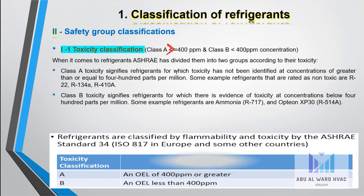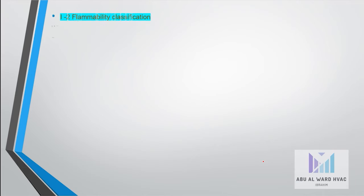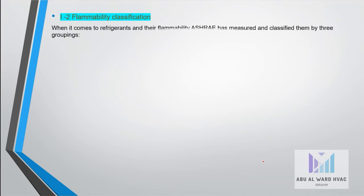According to ASHRAE, refrigerants are classified by toxicity: class A for concentrations greater than or equal to 400 ppm, and class B for concentrations less than 400 ppm.